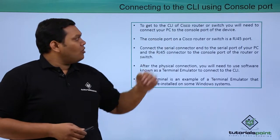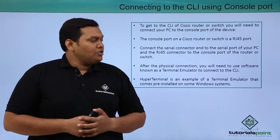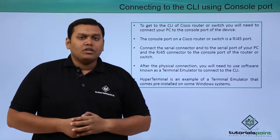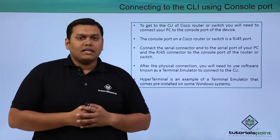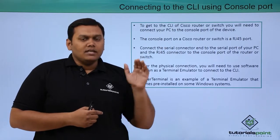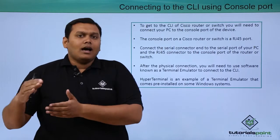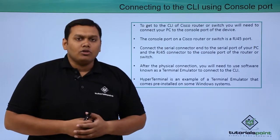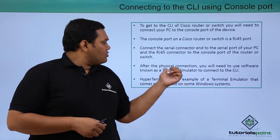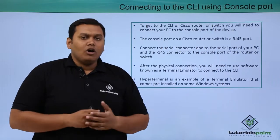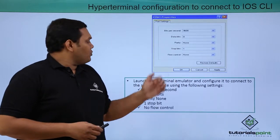To get the CLI of a Cisco router or switch, you need to connect a PC to the console port. A serial port connector on the PC side is connected to the serial connector of the PC, and the other end — an RJ45 port — is connected to the console port. After making the physical connection, you use software known as a terminal emulator, such as HyperTerminal, to access the device.